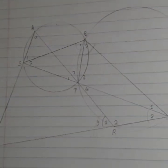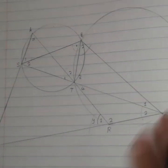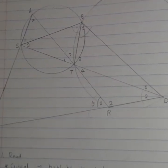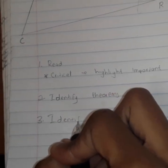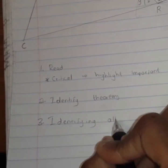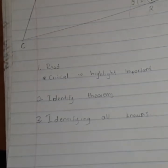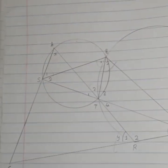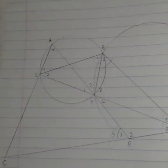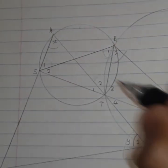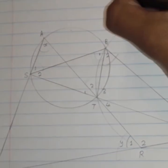With number two, you can simply incorporate number three, which is identifying all the known angles. If you check on this diagram, we're given that angle A is given by X. If you go back to identifying all known theorems, you'll know that this angle and that angle are equal, so angle A is equal to angle B1, which are both equal to X.